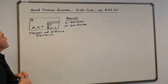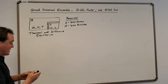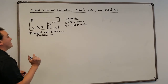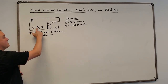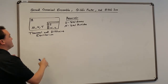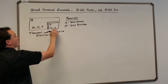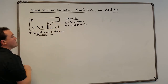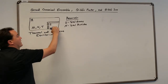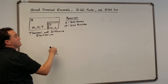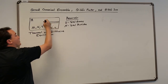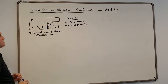So what the Grand Canonical Ensemble is: we have a constant chemical potential, volume, and temperature. This is all in a reservoir, and we have a subsystem that's in thermal and diffusive equilibrium. That means that energy can flow and particles can flow from one system to the other.